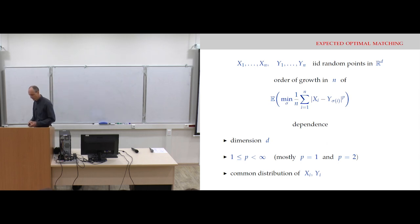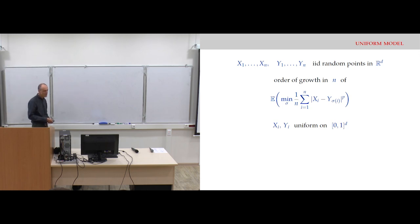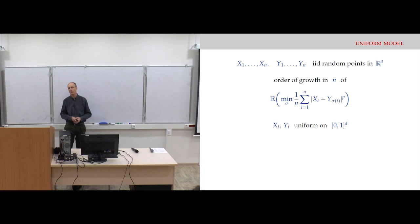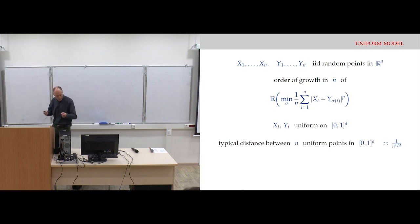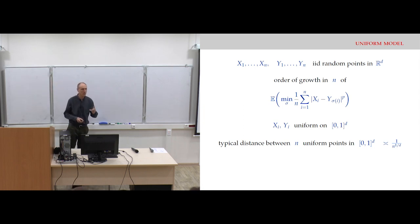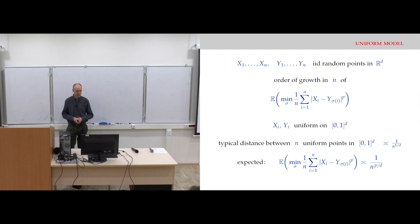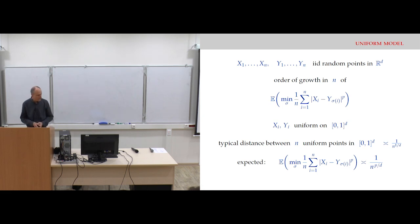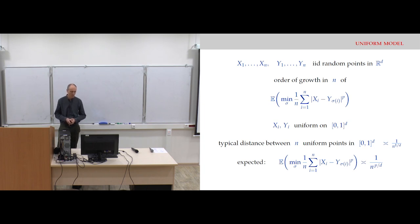The main example in this investigation is simply the case when you take the points to be uniform on the unit cube. You take the x_i and y_i IID, uniform over the unit cube of dimension d. In this case, the intuition is that when you have n uniform points in the unit cube, the typical distance between two points is of the order of 1/n^{1/d}, where d is the dimension. So you expect the quantity we are looking at should be of the order of 1/n^{p/d}, because there is a p-th power in the definition of the cost.